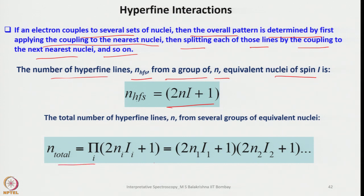The total number of lines N_total is calculated accordingly. If you have more than one type of nuclei, how they are going to interact depends upon how far they are from the electron.